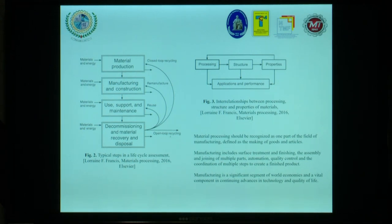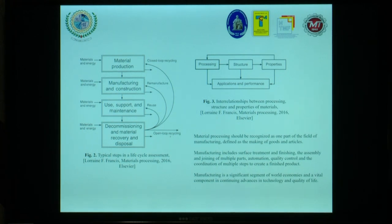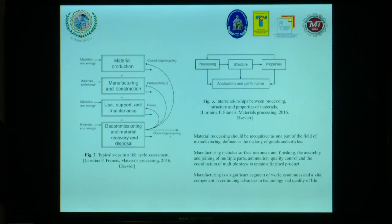This is quite important. As I mentioned before, material processing should be recognized nowadays as one part of manufacturing. Otherwise, we cannot find the optimum technology — we cannot fix the optimal technological parameters without material processing. Manufacturing includes surface treatment and finishing, assembly and joining of multiple parts, automation, quality control, and coordination of multiple steps to create the final product. Manufacturing is a significant segment of the world economy, because now we are talking about circular economy.